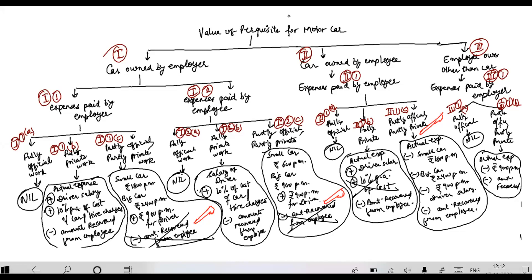Second case: car owned by employee, and expenses are borne by the employer. Fully official purpose — value is nil. Fully private — actual expenses plus driver's salary to be added. But depreciation will not be added because the car belongs to the employee. Minus any amount recovered from the employee.